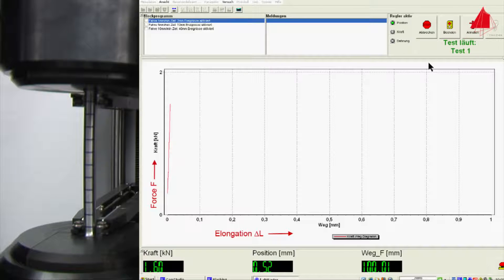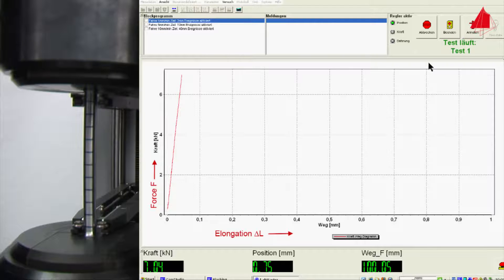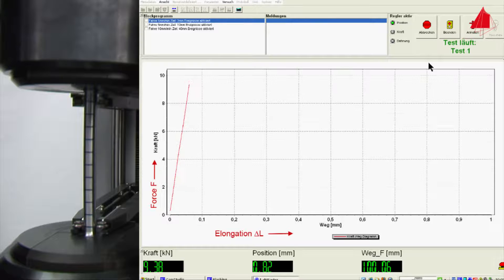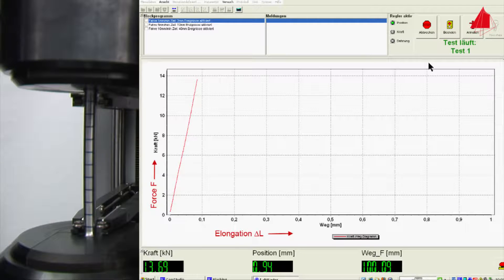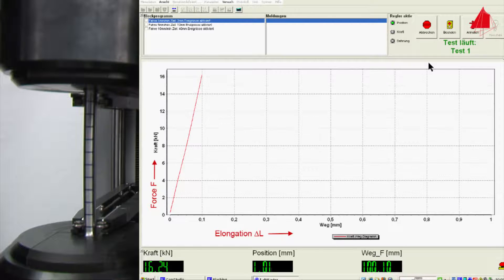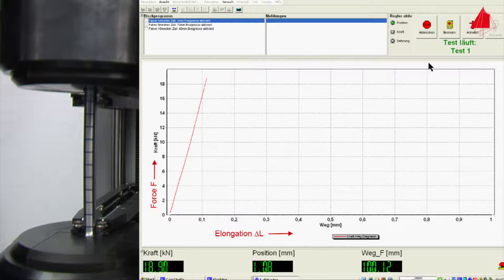At first, the force rises rapidly. Force and elongation are proportional and form a steep straight line in the diagram. In this area, the material behaves elastically. If the test piece were to be unloaded from this area, it would spring back completely to its original length.